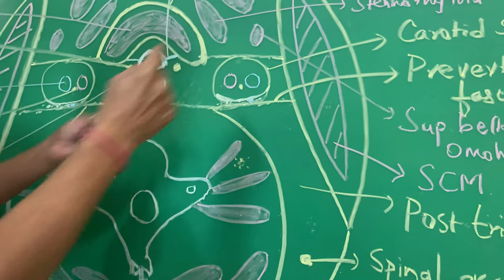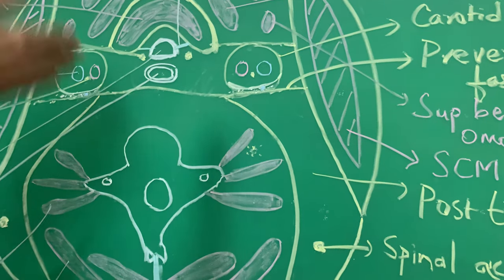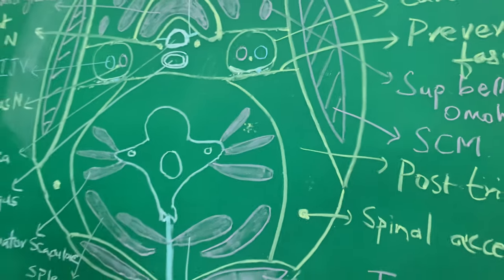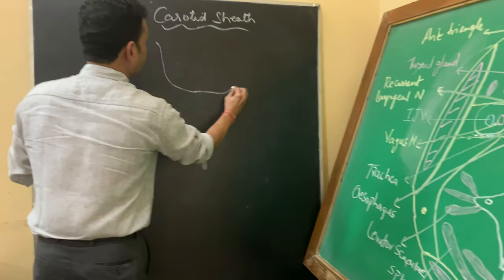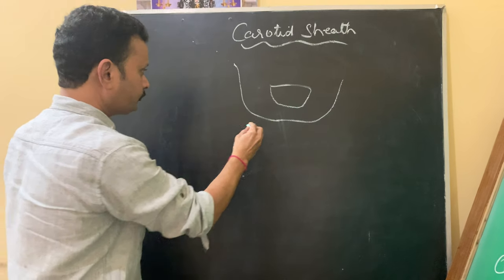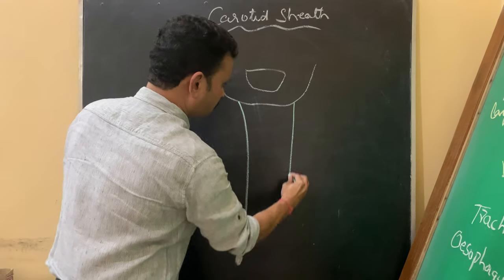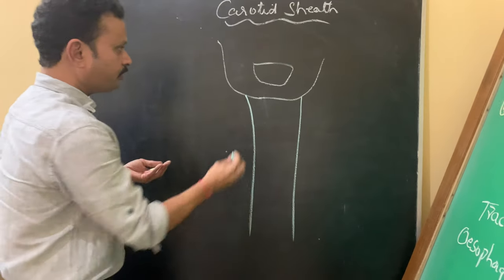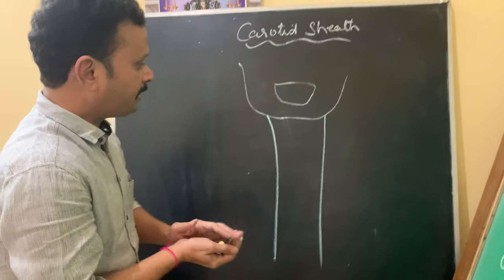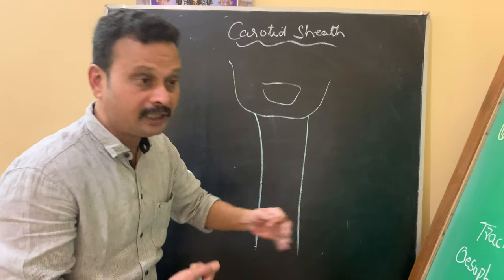Now, the structures piercing the carotid sheath — to know that, I would like to go with the longitudinal section. This carotid sheath extends above to the base of the skull, and below to the arch of the aorta.